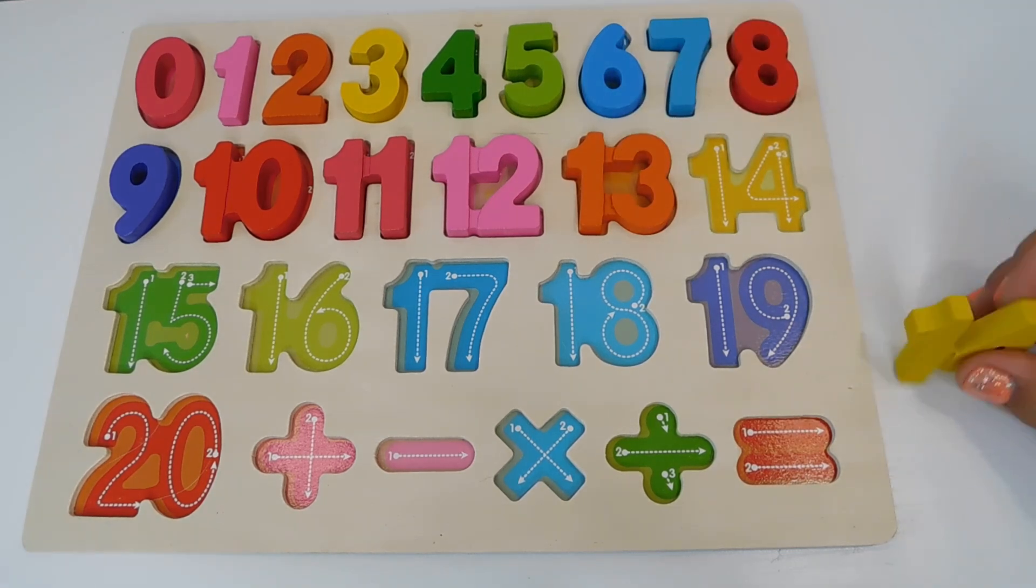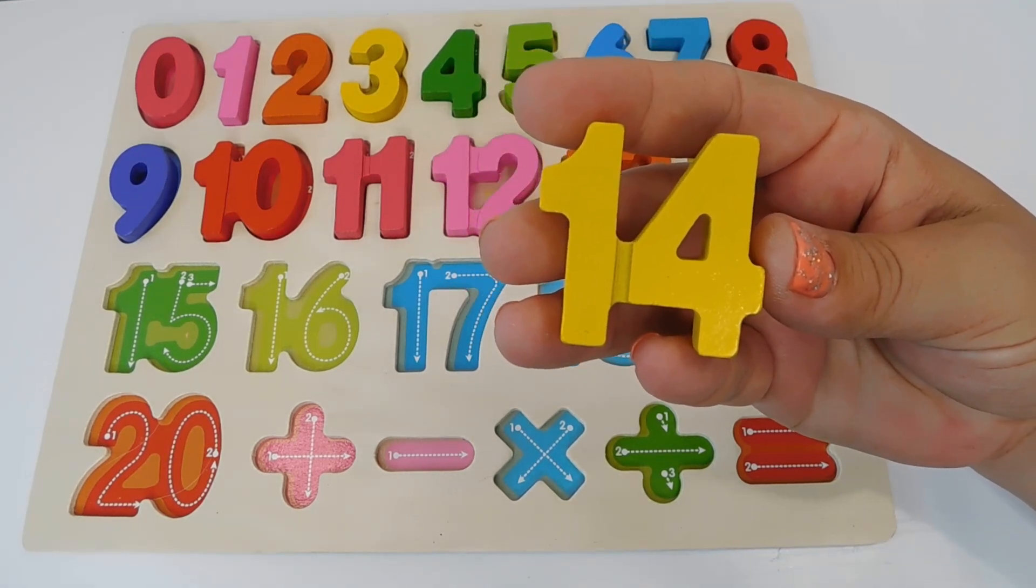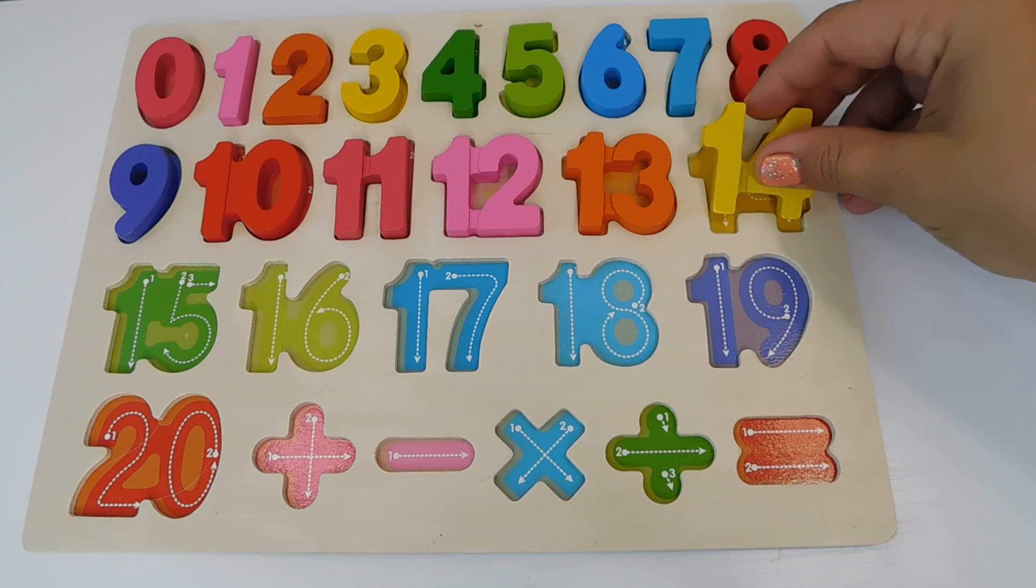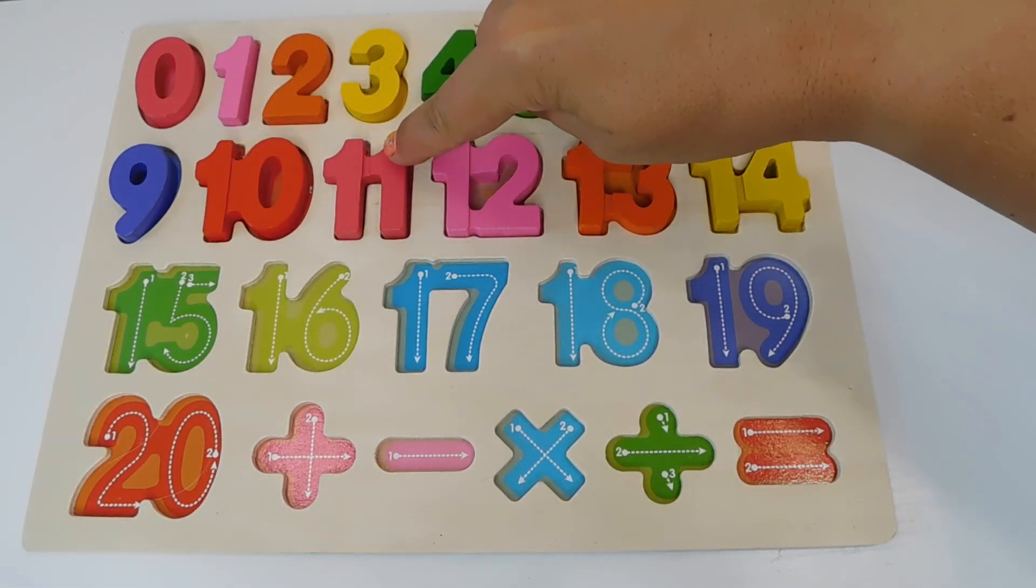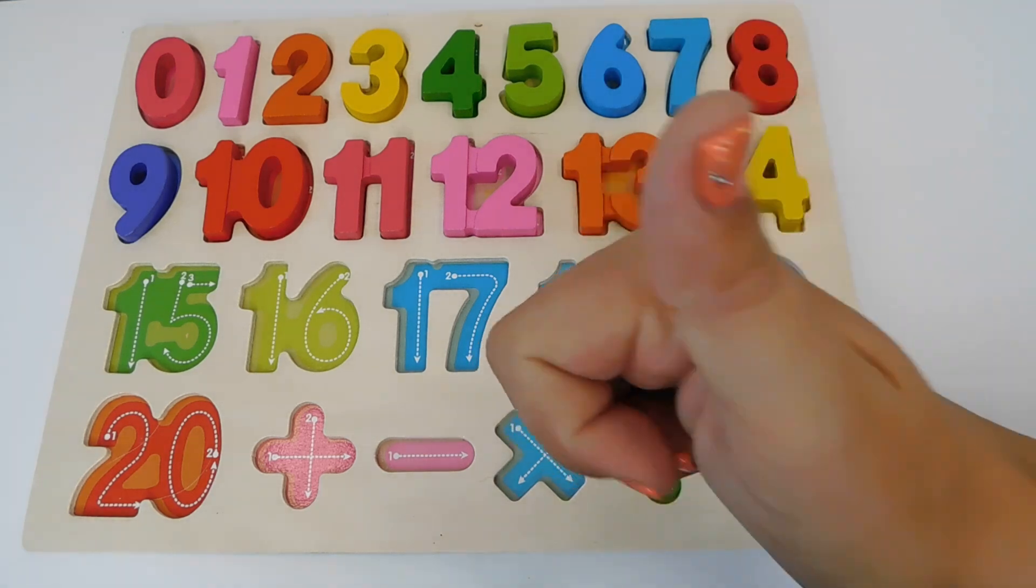Our next number is 14. And it's yellow. 14. Number 14 goes here. We know 9, 10, 11, 12, 13, 14. We're so smart.